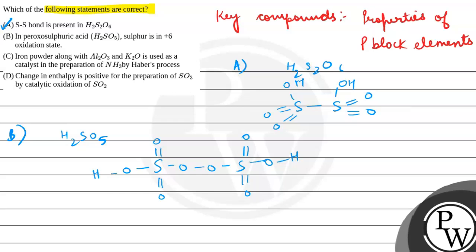What is this option? We are saying that the oxidation state is +6. If we balance the oxidation state, we can see the oxidation state of sulfur is +6. So the second statement is correct.